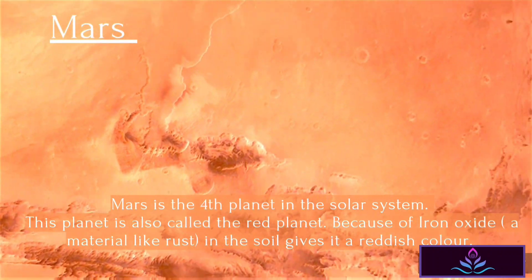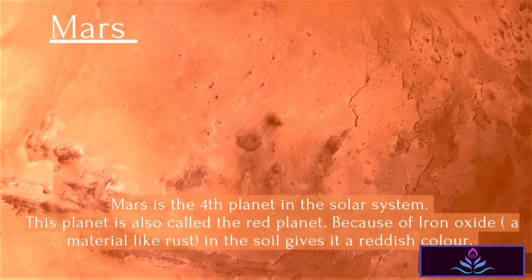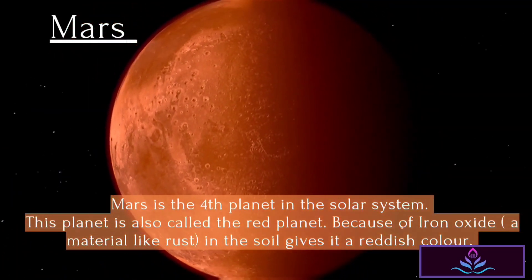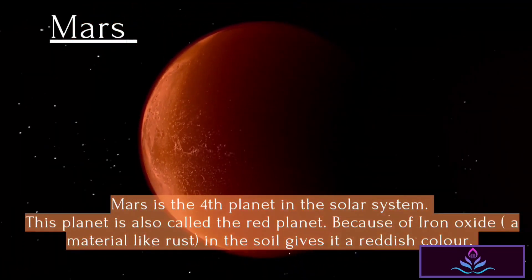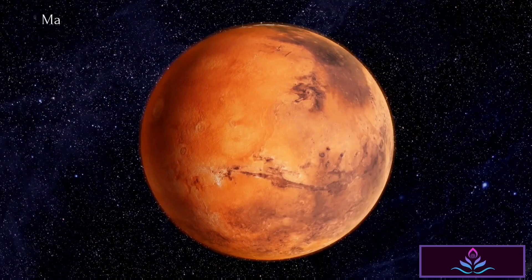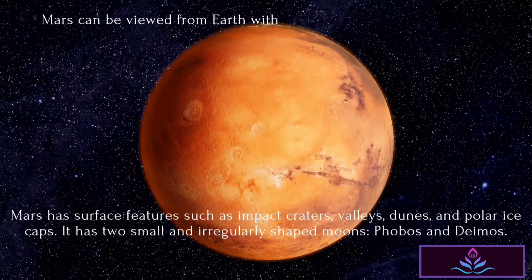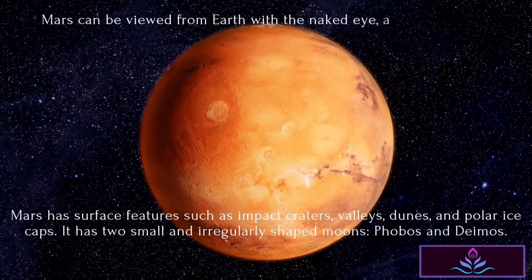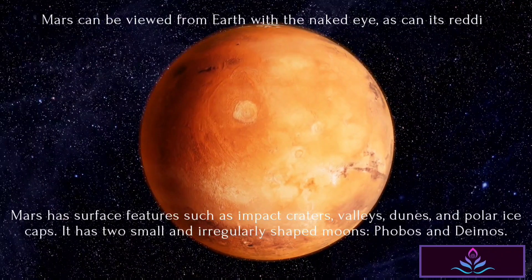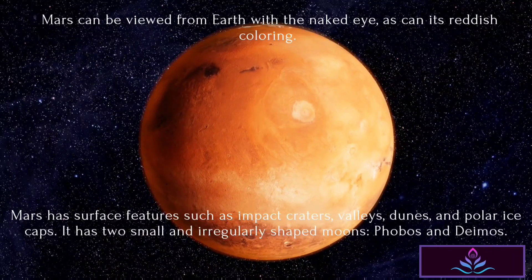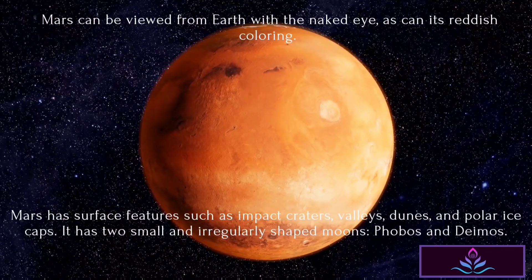Mars is the fourth planet in the solar system. This planet is also called the red planet because of iron oxide, a material like rust, in the soil gives it a reddish color. Mars can be viewed from Earth with the naked eye. Mars has surface features such as impact craters, valleys, dunes, and polar ice caps. It has two small and irregularly shaped moons, Phobos and Deimos.